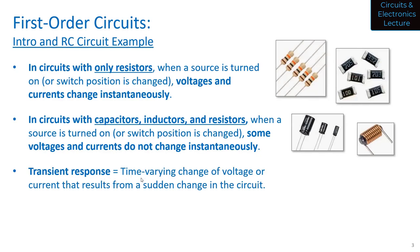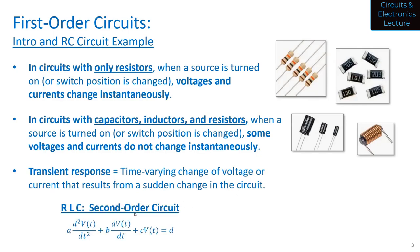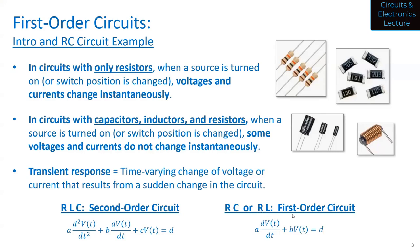Whenever I say transient or transient response, that means the time-varying change of voltage or current that results from some sudden change in the circuit. If you have R's, L's, and C's in a circuit, you get a second-order differential equation. In this class, we're just going to consider first-order circuits, which means RC circuits or RL circuits — not all three components in the same circuit. When you analyze using KVL, KCL, whatever, you will wind up with a first-order differential equation of a specific form.